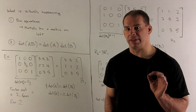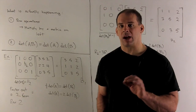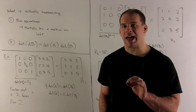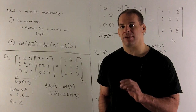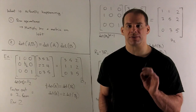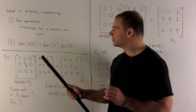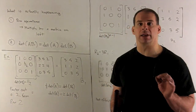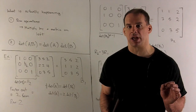Why do row operations have the effect that they do on the determinant? Two reasons. If I apply a row operation to a matrix, we can get that same result as if we multiply on the left by a certain type of matrix. Then, if I take the determinant of a product of two matrices, I get the same answer as if I took the product of their determinants — that is, det(A×B) = det(A)×det(B). And that holds for three, four, or as many matrices as you like.